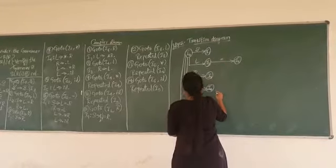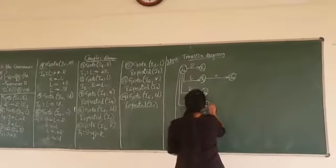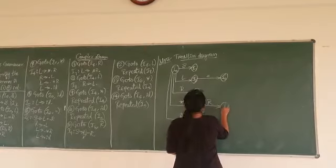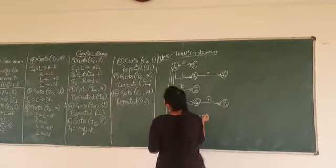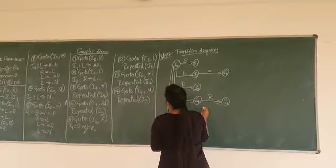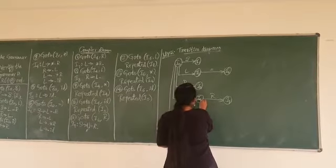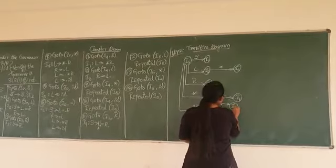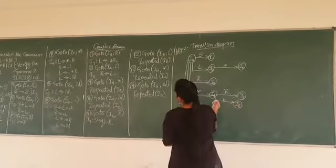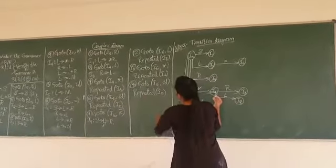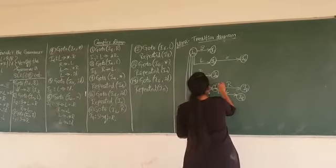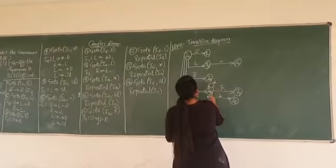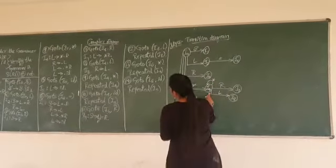I4 upon capital R produces the new state, that is I7. Next, I4 upon capital L, it is I8. Next, I4 upon star is repeated to I4, so self loop for star on I4.